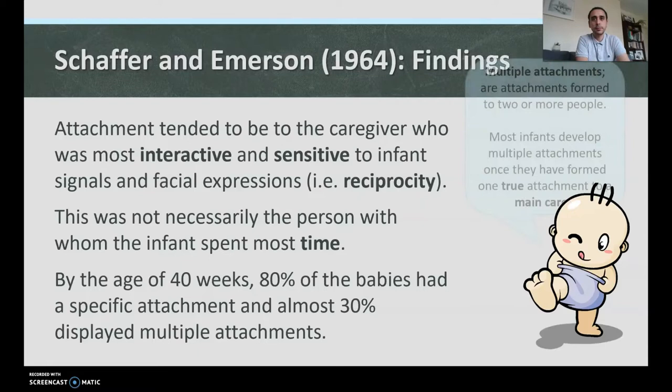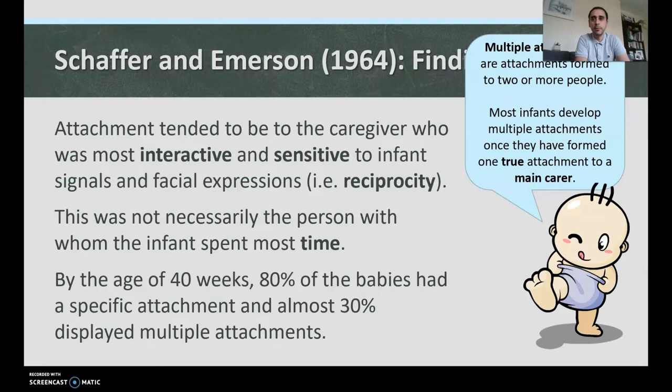Multiple attachments are attachments formed to two or more people. Most infants develop multiple attachments once they have formed one true attachment to a main caregiver. What Schaefer and Emerson found was that babies formed one attachment first — the primary attachment figure — and then later formed multiple attachments.